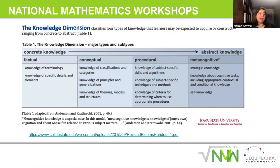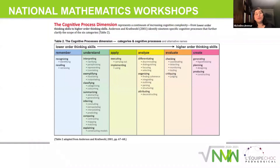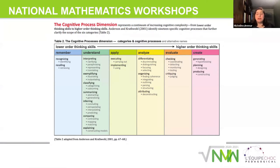Now with the competency way, we're looking more at the cognitive process dimension — developing a more action-oriented way of thinking. We're looking from remembering, understanding, applying — which was the targeted outcome before — and now we're trying to use more critical thinking and metacognition: analyze, evaluate, and create.